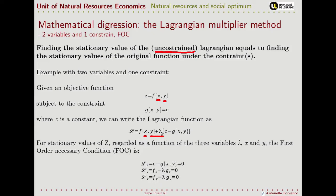We set the first derivative of the Lagrangian with respect to lambda, and this is nothing else than our constraint — it guarantees that the constraint is respected. This is the condition that guarantees that maximizing the Lagrangian is equivalent to maximizing our original function while respecting the constraints. The other two first-order conditions are taken with respect to our original variables x and y.